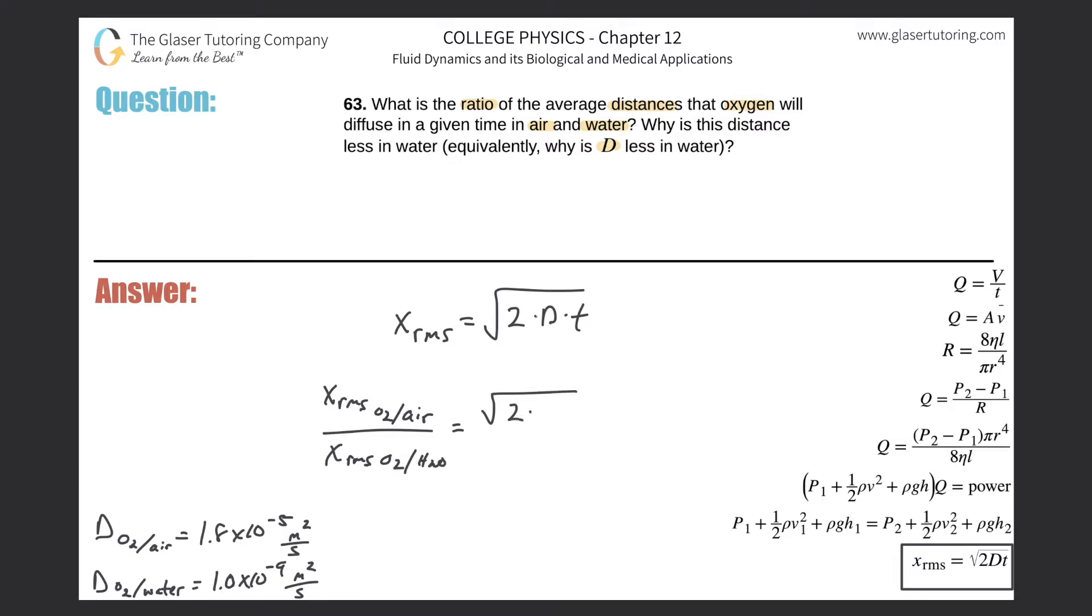All I now need to do is just plug in the formulas. Since this is a simple ratio, this will be √(2 × D × t) for oxygen in air, divided by √(2 × diffusion constant of oxygen in water × t).